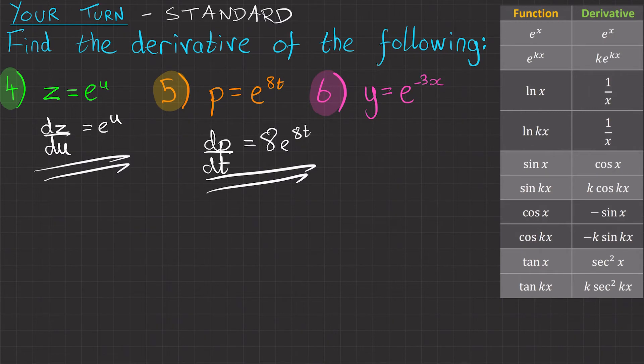Question six, y equals e to the minus 3x. Again, we'll be using this one again. So dy/dx equals minus 3e to the minus 3x.